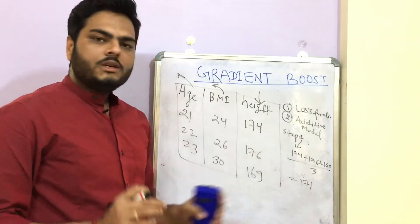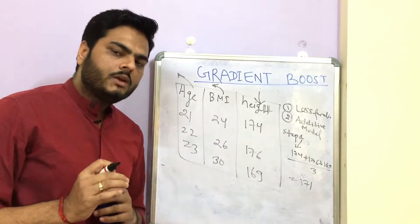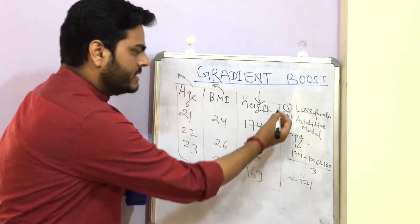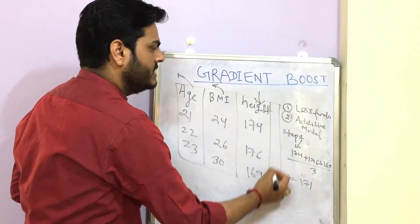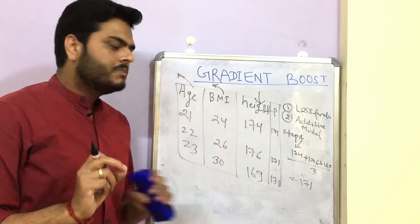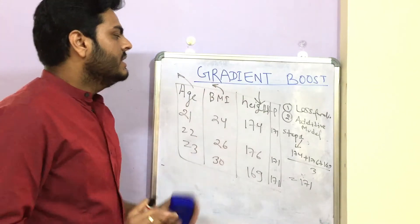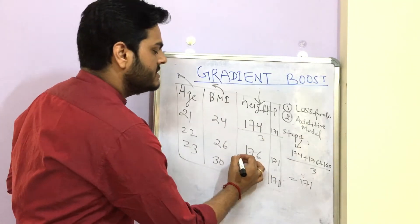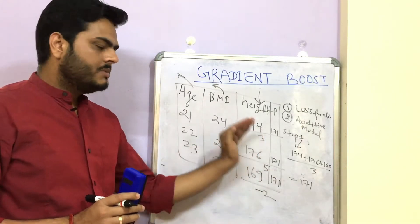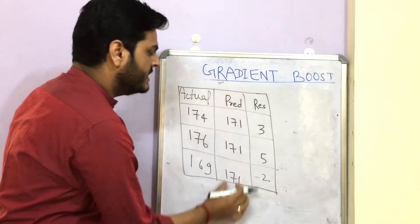So 171 is the average height. If there is no model or no learning in place, all predicted values will be 171. Now we have actuals and predicted values, so we can compute residuals — actual minus predicted. Residual for the first record will be 3, the second will be 5, and the third will be minus 2.